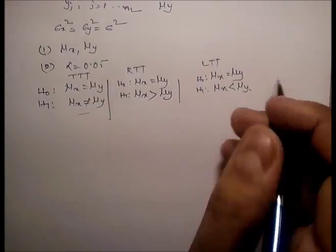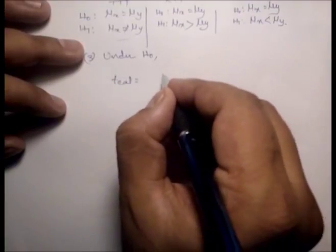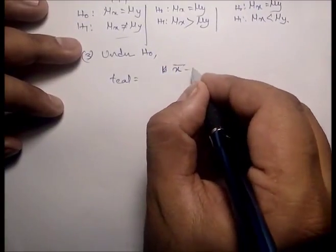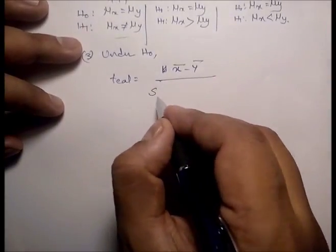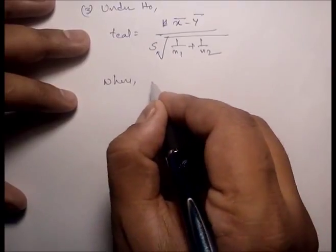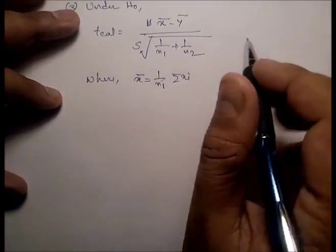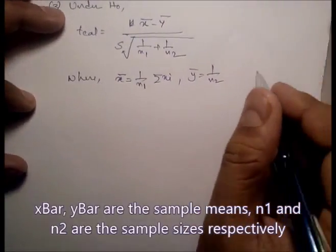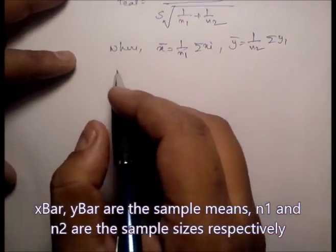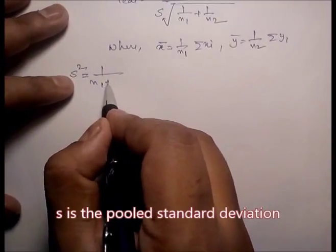Under H0, the test statistic is t equals (x_bar minus y_bar) divided by s times the square root of (1/n1 plus 1/n2), where x_bar equals (1/n1) times the summation of xi, and y_bar equals (1/n2) times the summation of yi.